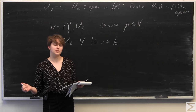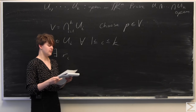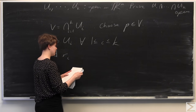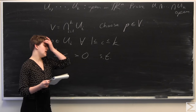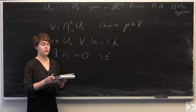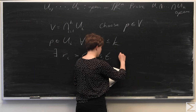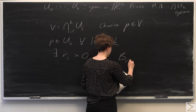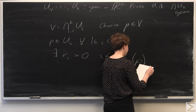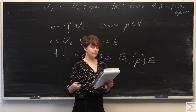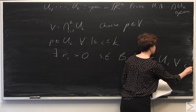We know that by definition, because each ui is an open set, there exist some radii ri — so r1 through rk — greater than 0, such that by definition of the open set, we have balls of radii ri centered around p that are all contained inside each respective open set. So the ball of radius ri centered around p, for all i, is completely contained within ui.